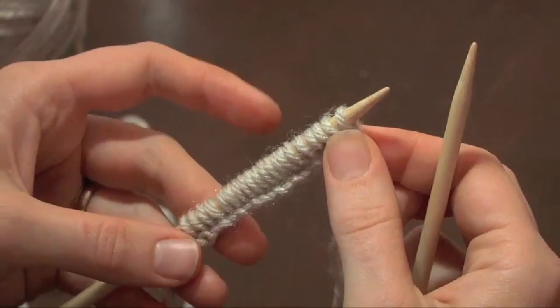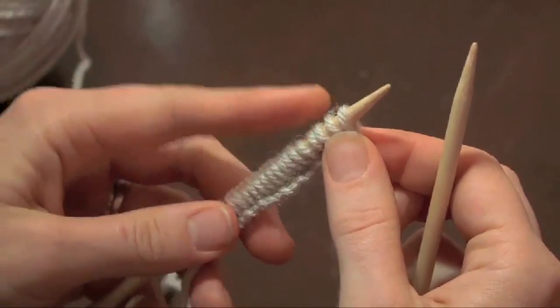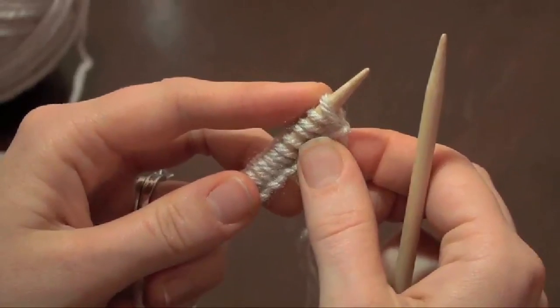Once you've cast on all 20 of your stitches, you are going to begin knitting. We're going to start with the basic knit stitch.